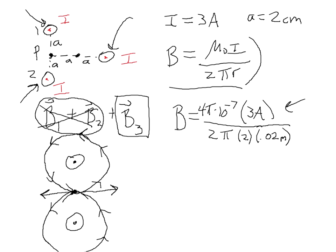The magnitude of wire 3's field is given by that same equation. The current is 3 amps and the distance from wire 3 to point P is 1A plus another 1A, which equals 2A. Plugging those numbers into the calculator gives a magnitude of 1.5×10⁻⁵ Tesla.